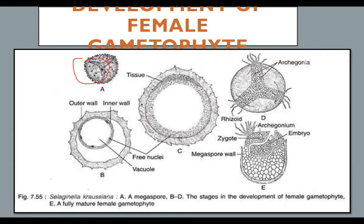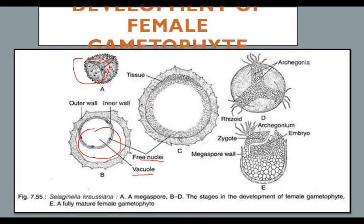The nuclei accumulate at the apical portion. The apical cellular part is known as the female prothallus and the lower non-cellular part is called the storage region. Here we can see this division and the free nuclei and the large vacuole. The vacuole disappears due to the large cytoplasm and the female gametophyte is liberated from the sporangium. It falls on a suitable substratum, germinates, and the exine and mesine rupture. The cellular tissue protrudes out forming rhizoids, which help in fixation to the substratum and absorption of water.